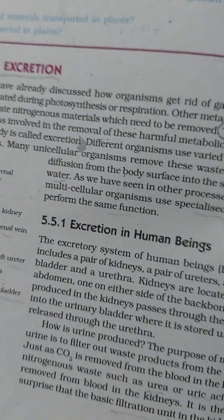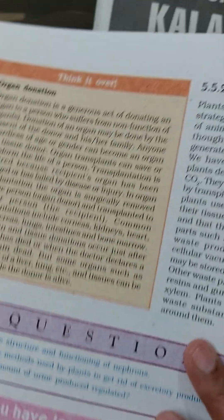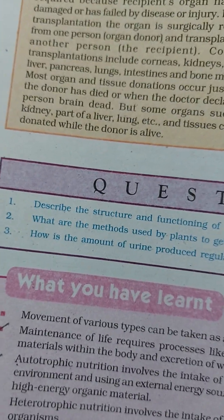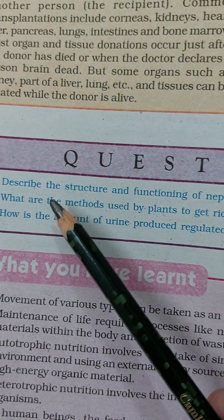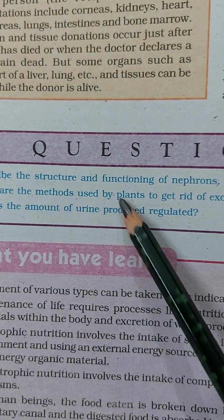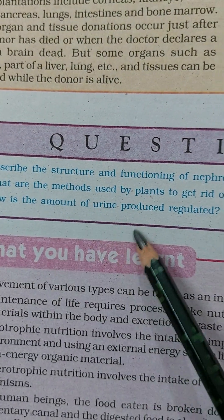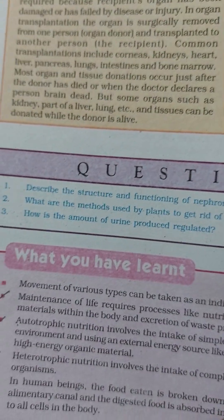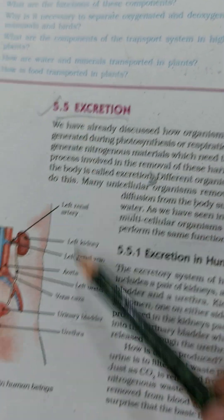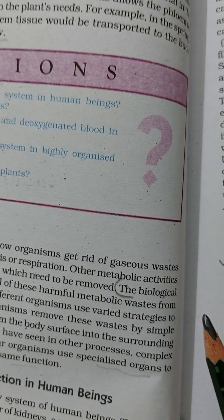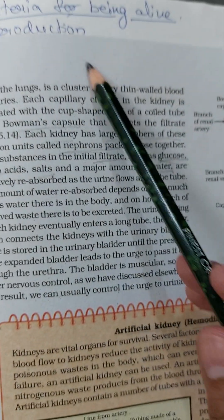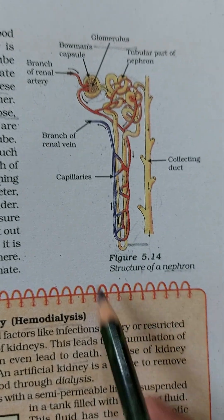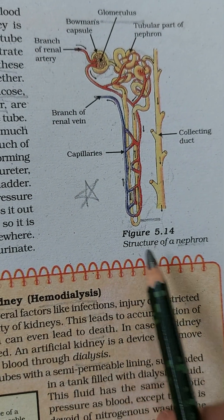So this was about the excretory system in human beings. Tomorrow we will study organ donation and excretion in plants, and with that we will finish this topic as well as this chapter. Three questions to discuss in the next session: describe the structure and function of nephrons; what are the methods used by plants to get rid of excretory products; and how is the amount of urine produced regulated? Please go through this topic once again — this is page number 96, chapter number 5, Life Processes, last topic. Please read this and make the diagram, as it is very important and comes in exam questions.